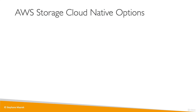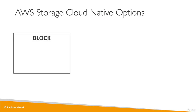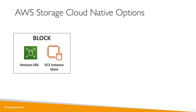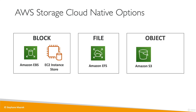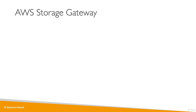To summarize the storage options on AWS: block storage would be EBS or an EC2 instance store; file storage would be a network file system, so Amazon EFS; and object storage would be Amazon S3 or Glacier. So where does the storage gateway fit in all this?